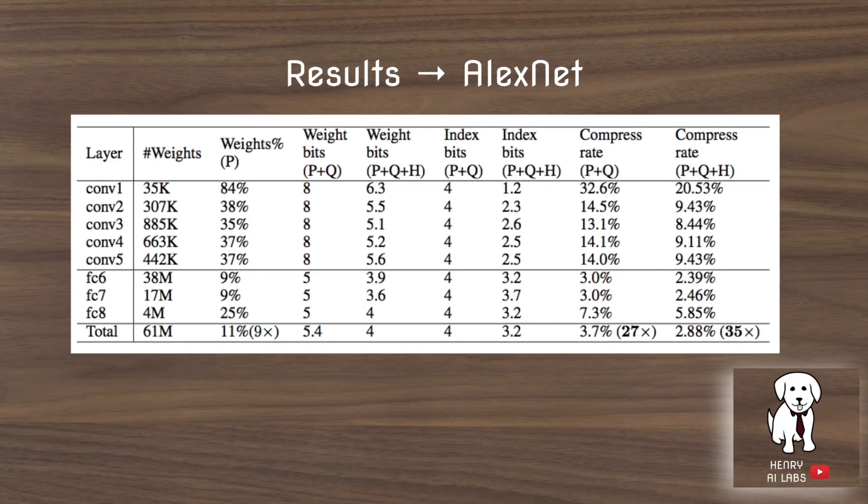These are the results on the AlexNet model. The first column shows the percentage of the weights that are pruned, then the weight bits after pruning plus quantization, and then it shows how the pruning, quantization, and Huffman coding interact together to really achieve a massive compression rate.